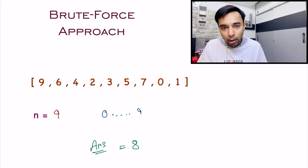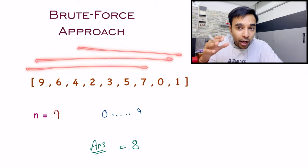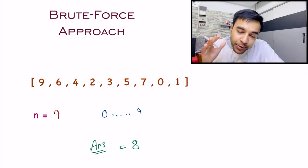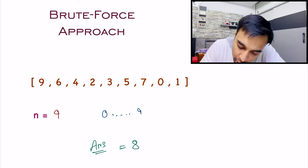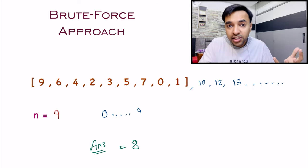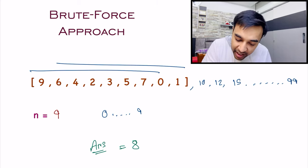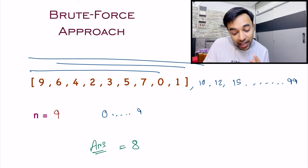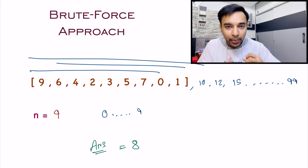But the only problem with this approach is that you are iterating this array again and again, checking every element, and that takes up so much time. Think about it — if this array had a lot more elements and the range could be 99 as well, will you keep on traversing this array again and again? This will take up so much time, and hence you need to start optimizing this solution.